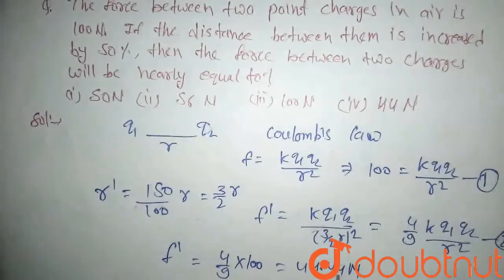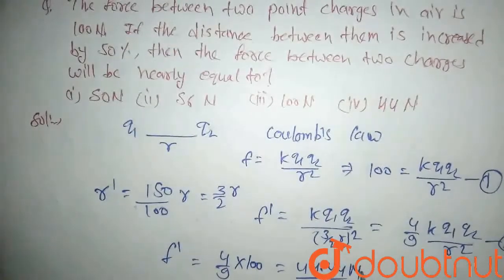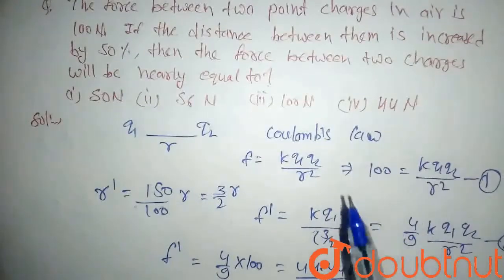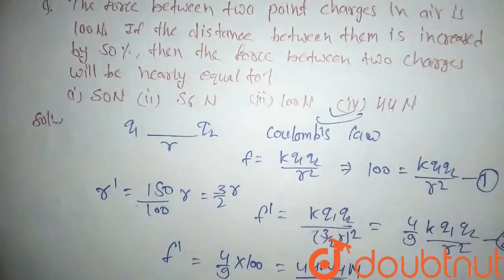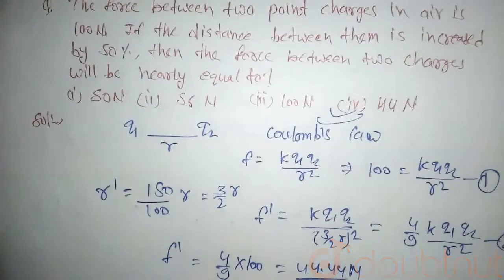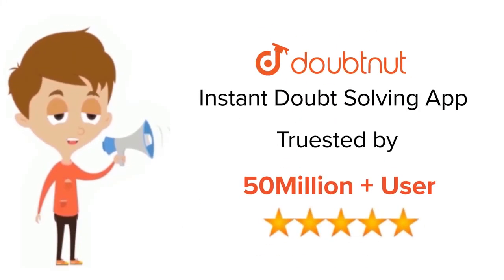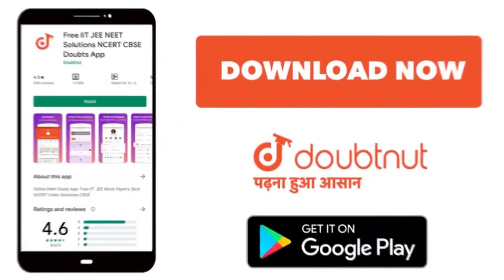In the options, it is nearly equal to the fourth option, so the fourth option will be our answer. Thank you. For class 6 to 12th, IIT-JEE and NEET level, trusted by more than 5 crore students, download Doubtnet app today.